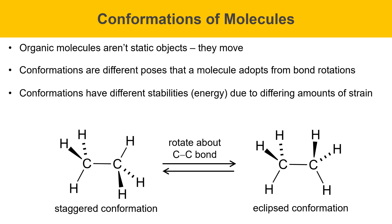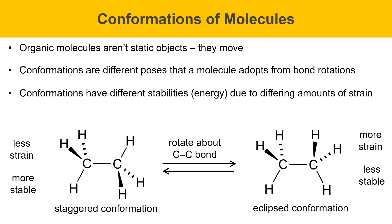Conformations have different stabilities or energies due to differing amounts of strain. When electrons, bonds, or atoms are brought too close together, they begin to repel each other, creating additional chemical potential energy called strain. In the staggered conformation, the bonds and hydrogen atoms are as far apart from each other as possible, so the staggered conformation has less strain and is more stable. Rotating into the eclipsed conformation brings them as close together as possible — the in-plane, dashed, and wedged hydrogens are all close together — so the eclipsed conformation has more strain and is less stable, meaning it's higher in energy.